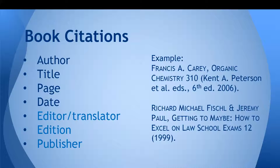Books and treatises are among the easiest resources to cite to in the Bluebook. For most sources, you will only need the name of the author, the title of the book, the page you are citing, and the year. You may omit the editor or translator if there isn't one, and you don't need to include the edition unless there have been multiple editions. The same goes for the publisher — unless there have been multiple publishers, including the name isn't necessary. You're just giving enough information to your reader so that they'll be able to locate the specific book. If there are multiple publishers or editors, then you need to start getting more specific.